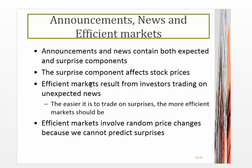Moving on, what causes prices to change? Announcements and news contain two things: information that we expect to hear, and surprises. It's the surprise components that ultimately affect stock prices. Efficient markets result from investors trading on unexpected news — in efficient markets it would be easier to trade on surprises, and markets would always move the right way at the right time with the right magnitude.